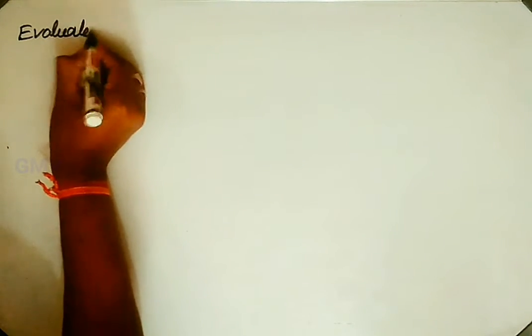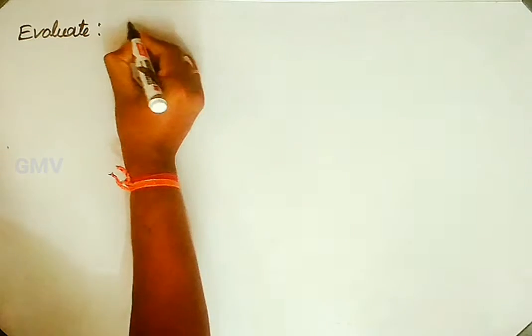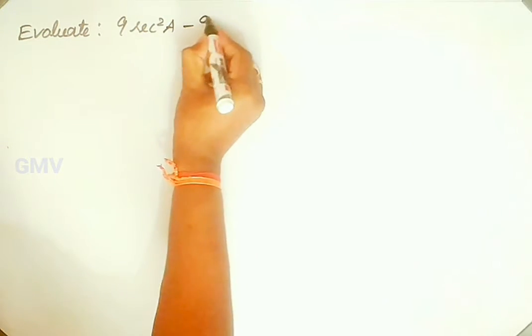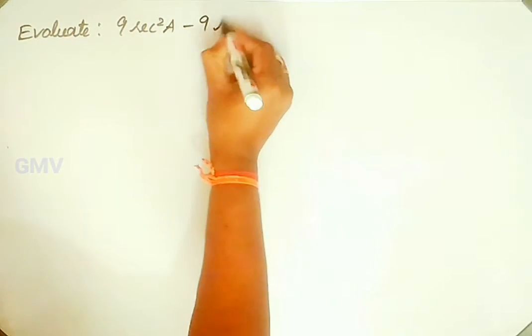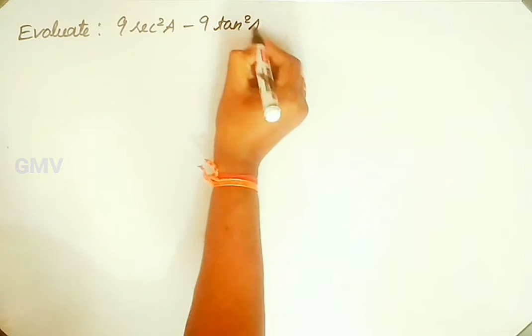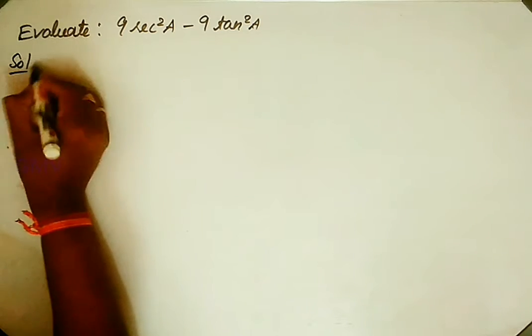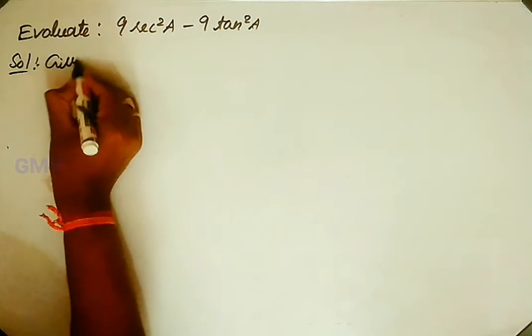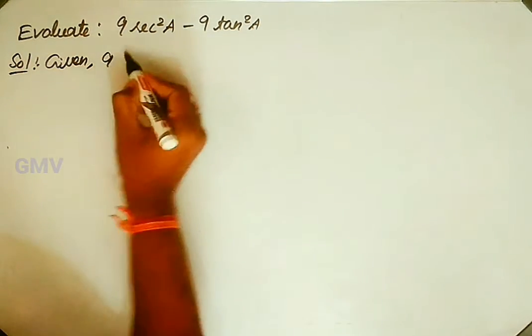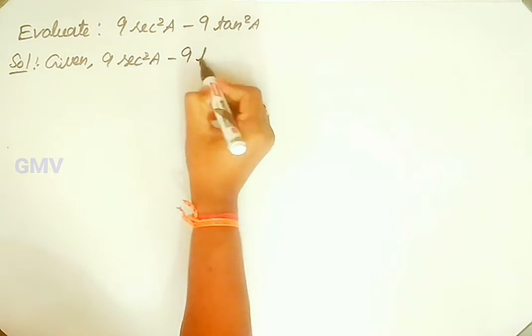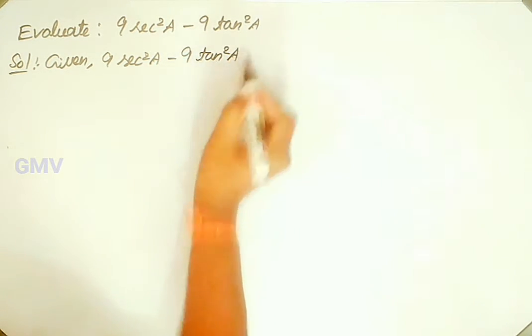This is the first problem: evaluate 9 secant squared a minus 9 tan squared a. In the solution, take the given as it is — 9 secant squared a minus 9 tan squared a.